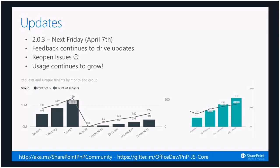The usage continues to grow in the library, which I think is really exciting. The left-hand chart shows both requests and unique tenants per month. We went from January's roughly 340 tenants up to 420, and now up to about 520 tenants — adding about 100 tenants a month. We're also adding about 3 million requests a month. Really exciting to see more people using the library, finding value in it, and giving us fresh points of view.